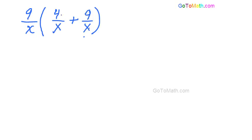Alright, so we have a common denominator, so we just add the numerators. And 4 plus 9 is 13 over x times 9 over x.